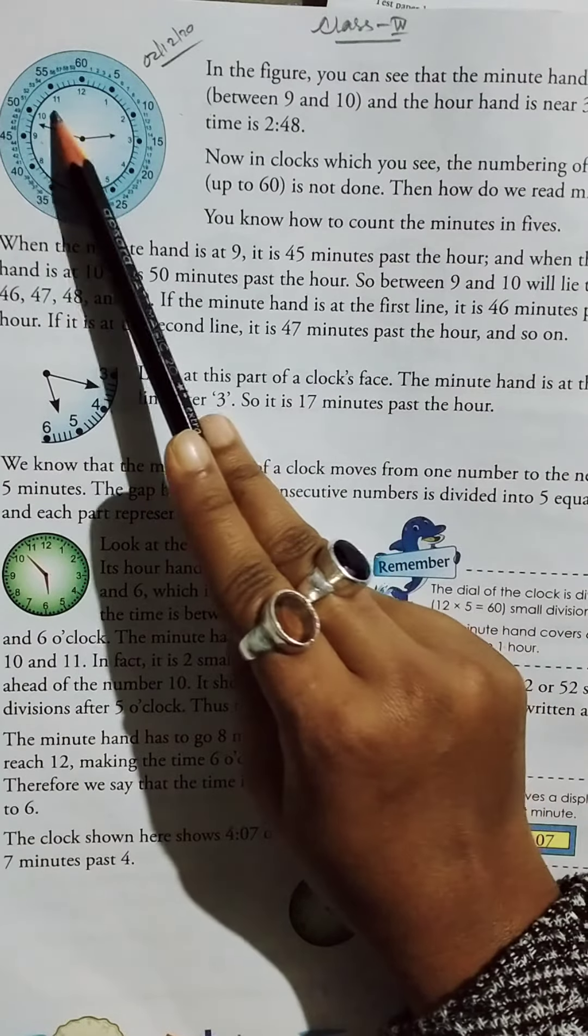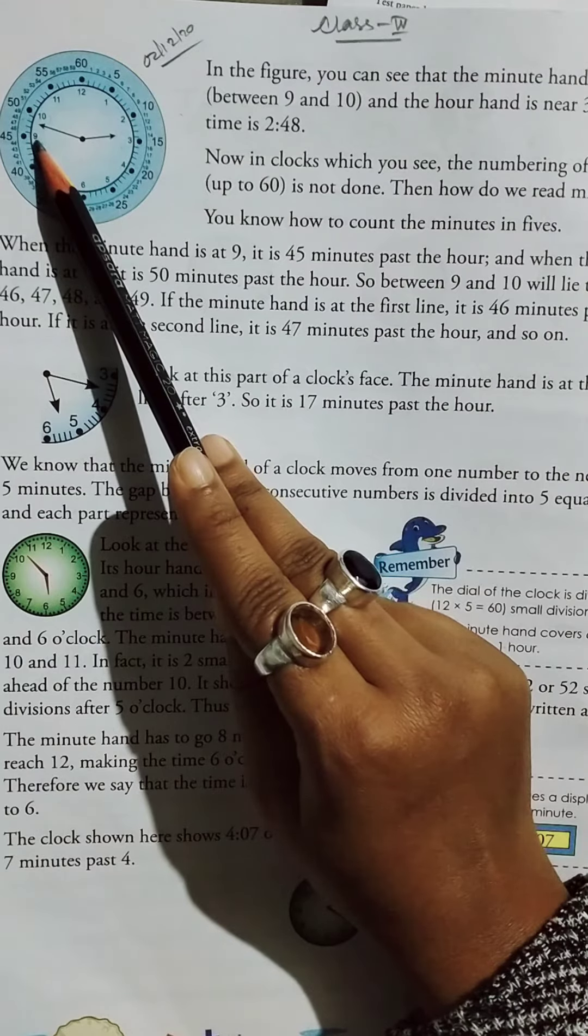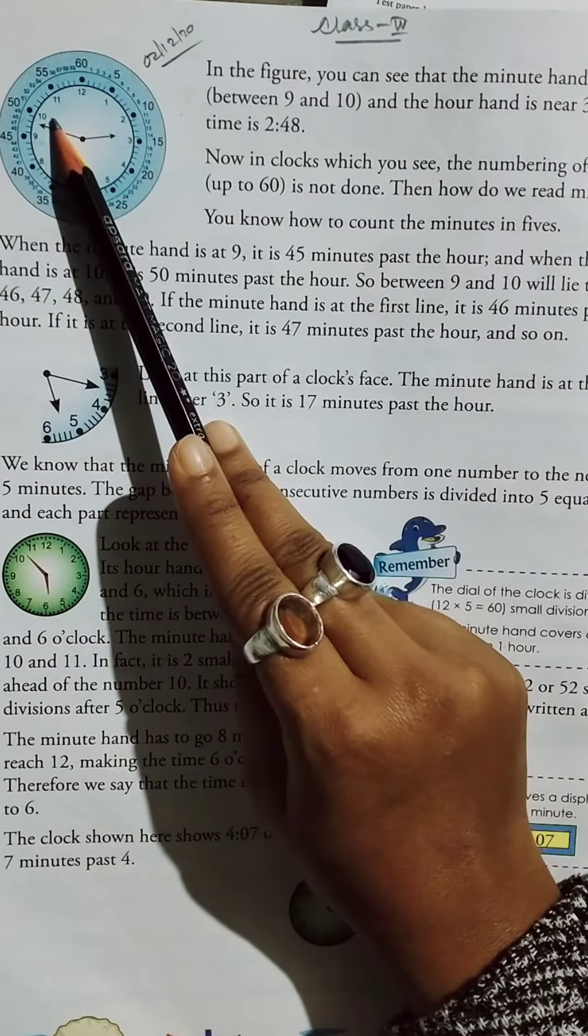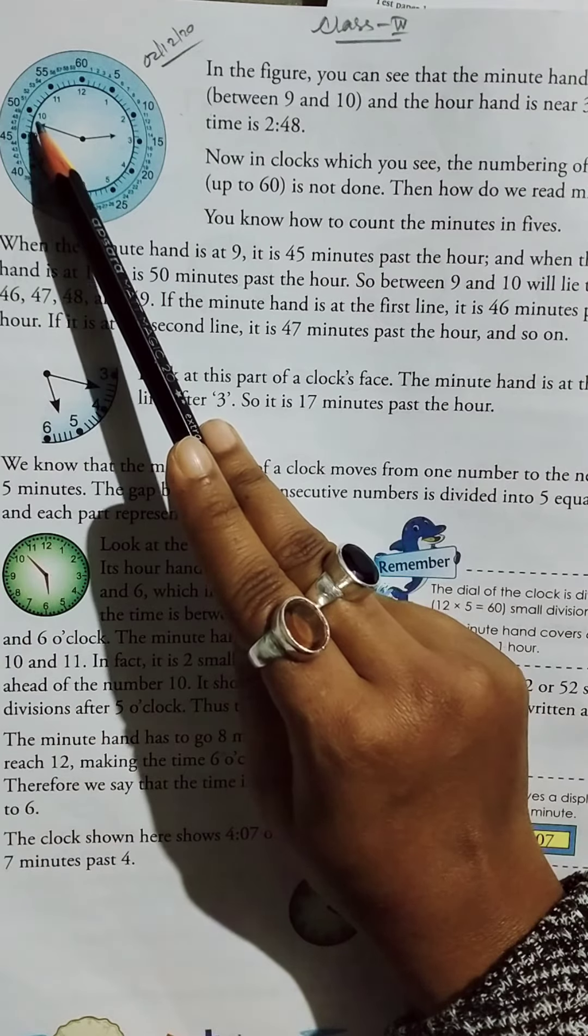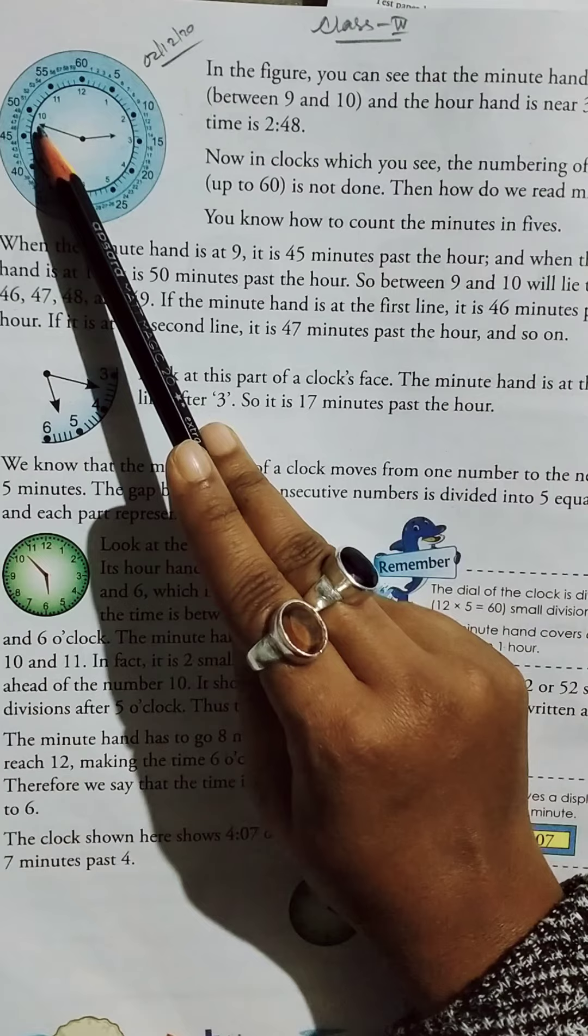So between 9 and 10, 9 is at 45 and 10 is at 50. So the lines are 46, 47, 48, and 49.